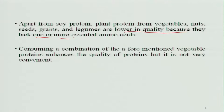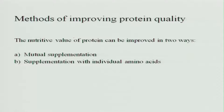Consuming a combination of vegetable proteins enhances the quality of protein, but it is not always convenient to combine different types of foods to get good-quality protein — you may not have sufficient resources to combine. The nutritive value of protein can be improved in two ways: one is by mutual supplementation, and the other is by supplementation of individual amino acids.